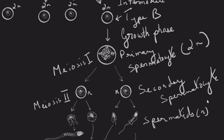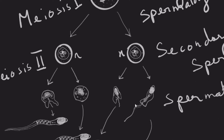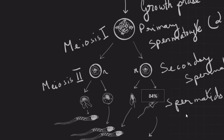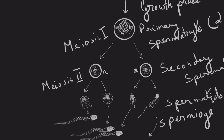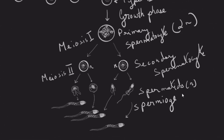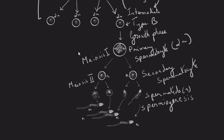Spermatids are again haploid. They are at different stages of physiological maturation but are not fully functional yet. They have to go through a very special process known as spermiogenesis for them to form the fully matured spermatozoa. The division of the primary spermatocyte through to the spermatids is referred to as the maturation phase.